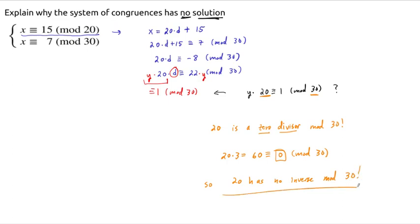And at that point, we know, okay, if 20 has no inverse, then we can't find our y. If we can't find our y, we can't find our d. If we can't find our d, we can't build our x. And so, this step right here is where everything breaks down.